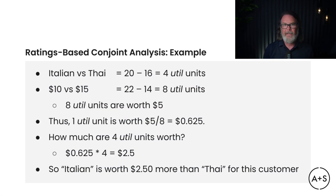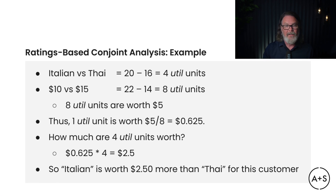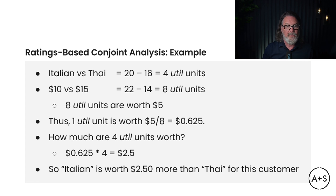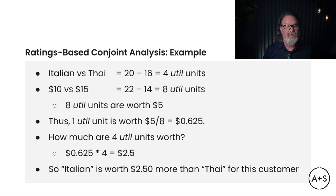When this data is collected, we can start to make calculations. For instance, if we compare the scores for Italian cuisine to those of Thai cuisine, this results in utility units being a little bit different. In this scenario, Italian has 20 utility units and Thai has only 16 — a difference of four utility units. Those are the part worths of Italian versus Thai, and we can see that, through this survey, respondents value Italian more than they do Thai. To determine the monetary value of those utility units, we examine the difference between the $10 and $15 price points: the $10 option received 22 utility units, while the $15 option received only 14 — a difference of eight utility units between those two part worths.